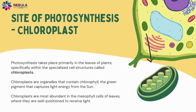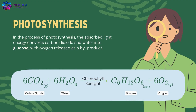Photosynthesis takes place primarily in the leaves of plants, specifically within the specialized cell structures called chloroplasts. Chloroplasts are organelles that contain chlorophyll, the green pigment that captures light energy from the sun. Chloroplasts are most abundant in the mesophyll cells of leaves, where they are well positioned to receive light.